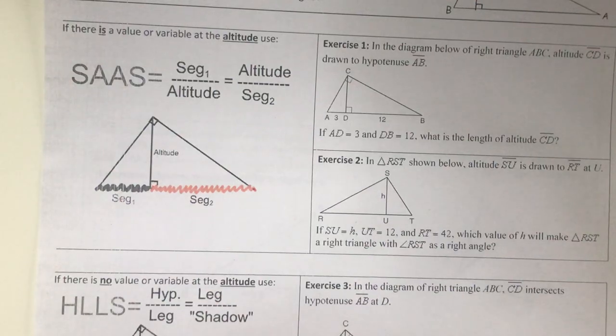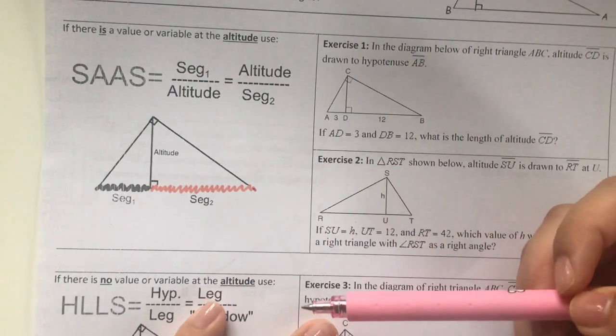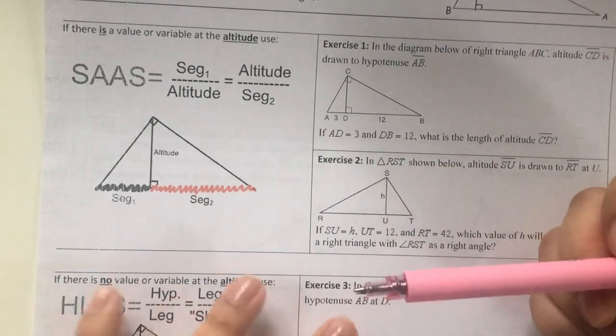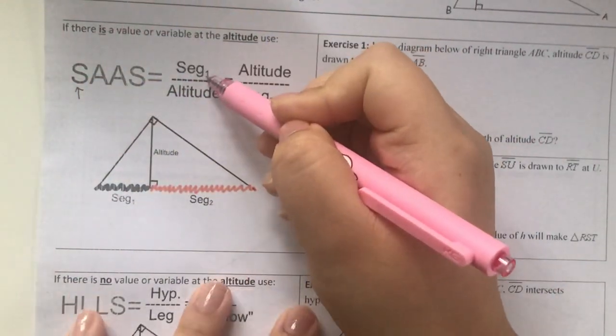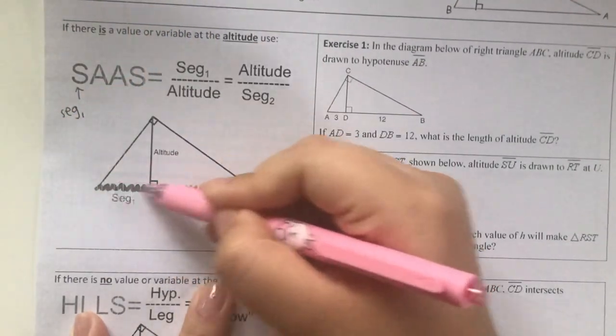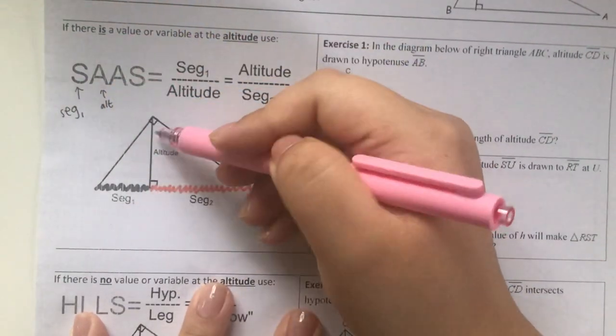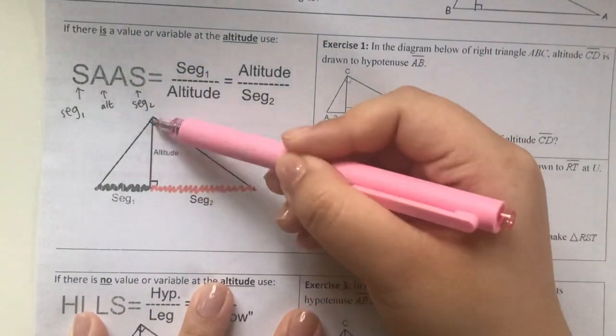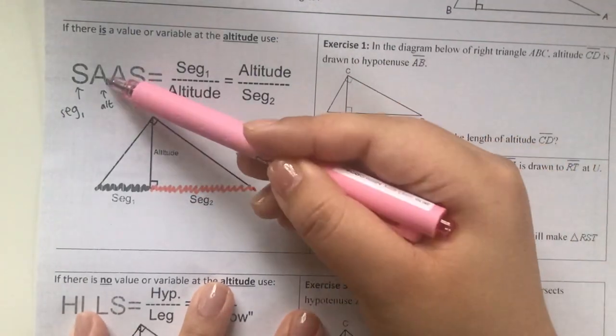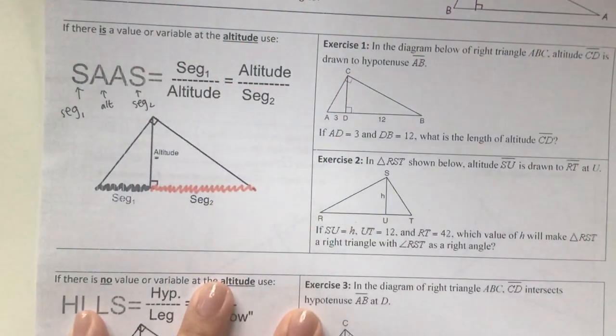Now let's get to today's lesson. If you like to feature any of your favorite songs, remember to leave it in the comments below. The first method we're going to learn I call it SAAS - S-A-A-S. This is representing segment one, altitude, altitude, segment two. Now whenever I need to find out or use the altitude, I must use SAAS.